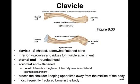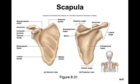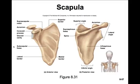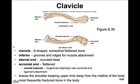Together, the clavicle and the scapula form the pectoral girdle. Pause here, close your books and notes, and draw yourself a simple scapula. Note the three borders and three angles, the acromion process, the coracoid process, the glenoid cavity, the spine, and the three fossae. On the clavicle, remember to identify the sternal end, the acromial end, and the coronoid tubercle.